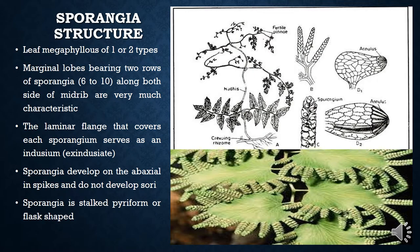Lygodium is megaphyllous and dimorphic. Megaphyllous means that the leaf is a large leaf where the central vascular bundle, the vascular strand, diverges and forms a reticulate type of venation. This megaphyllous leaf in Lygodium is dimorphic, meaning two types of leaves are present: one is the sterile leaves and another is the fertile leaves.